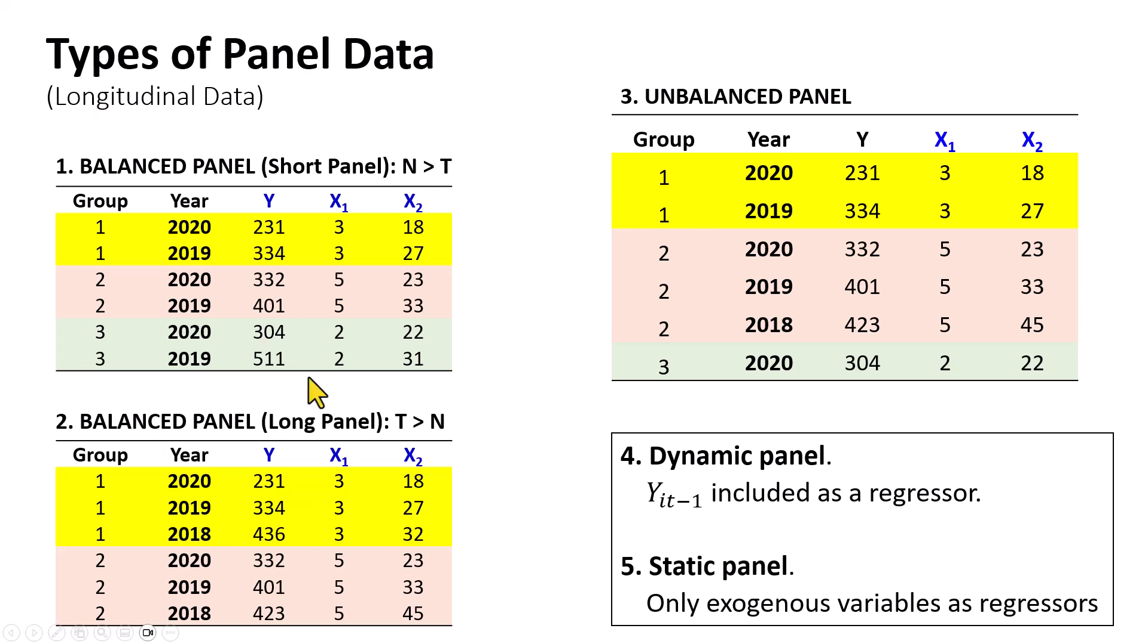The first two here are balanced panels, the case where the number of observations is the same for all groups in each period. The first is a short panel, where the number of groups is more than the number of time periods. The flip side of that is a long panel, which is where the number of time periods is more than the number of groups. Balanced panels such as these are generally easier to work with.